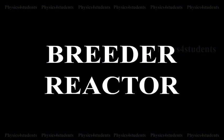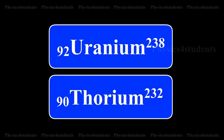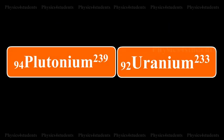Breeder Reactor. Uranium-238 and Thorium-232 are not fissile materials but are abundant in nature. In the reactor, these can be converted into fissile materials Plutonium-239 and Uranium-233 respectively by absorption of neutrons.